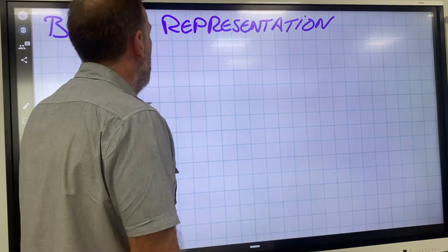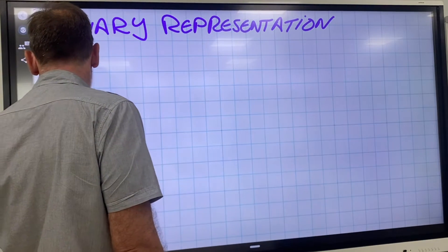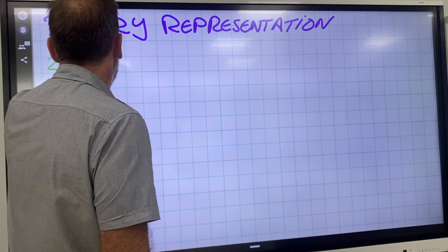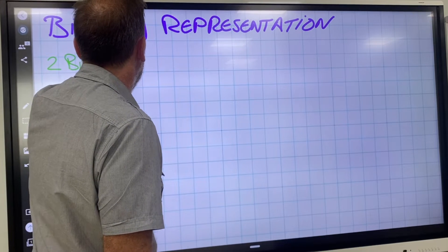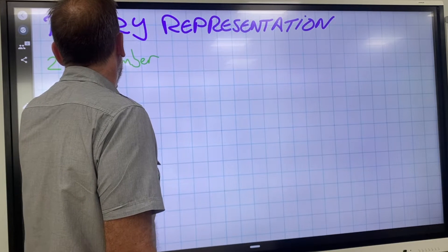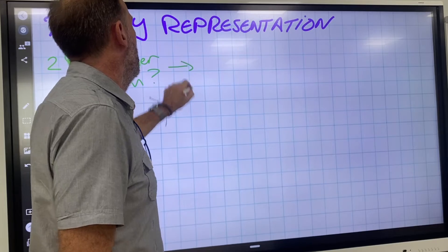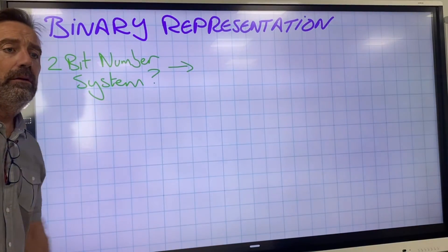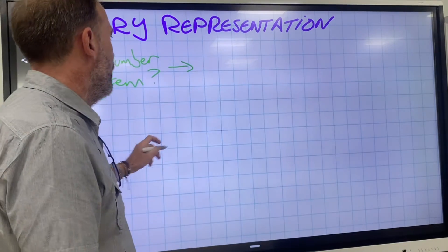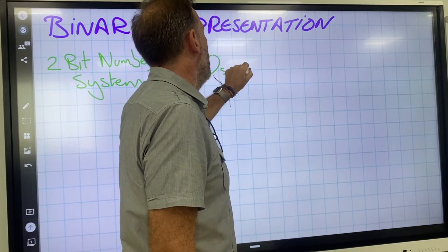Binary representation is known as a 2-bit number system. Why? Because it's only got zeros and ones.